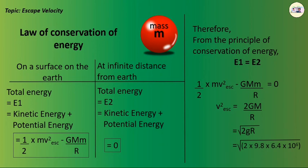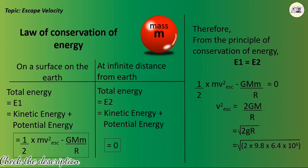This gives √(2 × 9.8 × 6.4 × 10⁶), and the answer is 11.2 km per second.